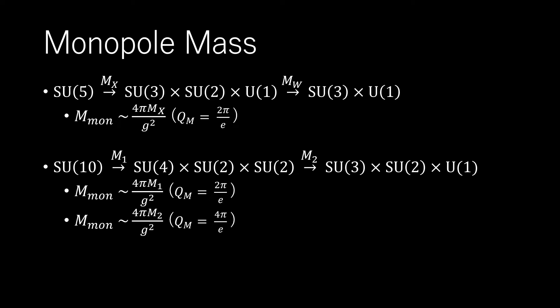In theories with several stages of symmetry breaking, monopoles of different mass scales can arise. In an SU-10 theory with SU-10 goes to SU-4 cross SU-2 cross SU-2, and then goes to SU-3 cross SU-2 cross U-1, there is monopole with Qm equals 2π over E and mass approximately equal to 4π m1 over G squared, and a much lighter monopole with Qm equals 4π over E and mass approximately equal to 4π m2 over G squared.